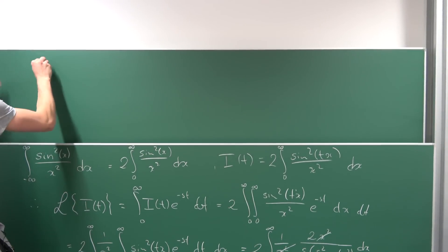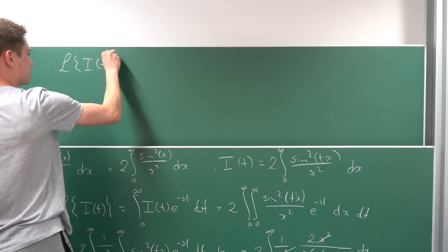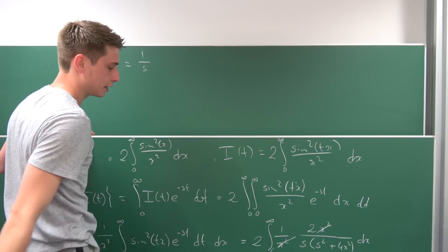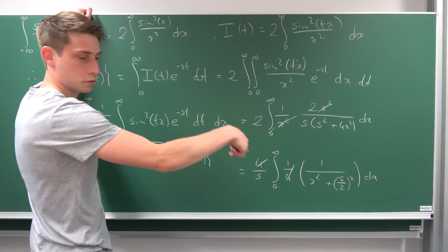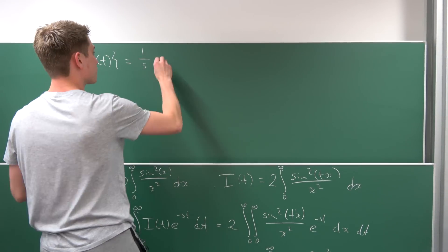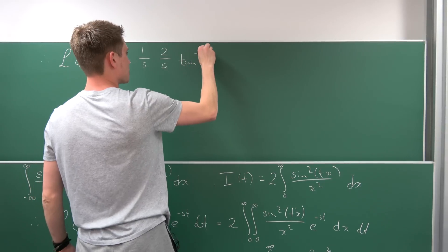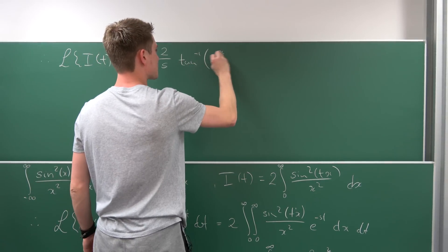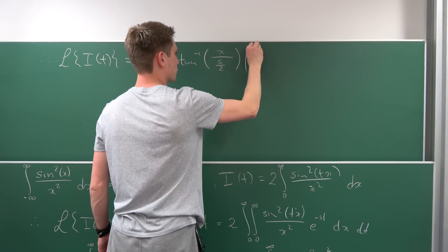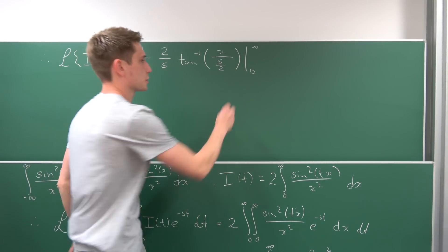In conclusion, we now know that the Laplace transform of I(t) is: we have this 1/s factor and... let's take the reciprocal of this term (definition link in description). So we have 2/s times the inverse tangent of x/(s/2) from 0 to infinity. The inverse tangent of 0 is just 0.